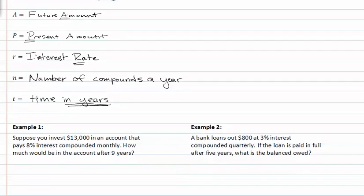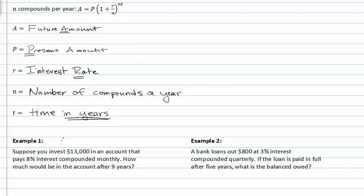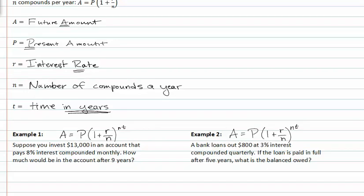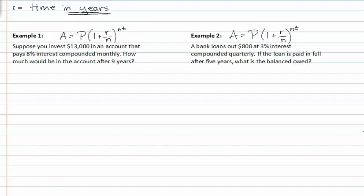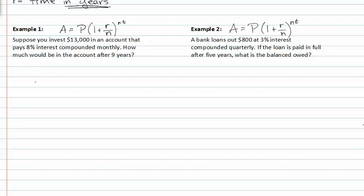Let's look at example one. Rewriting our formula so we don't forget it, and we'll probably need it in both examples. Suppose you invest $13,000 in an account that pays 8% interest. So let's just label everything. We have A, we have P, we have R, N, and T, and we'll just fill all those things in as we read.